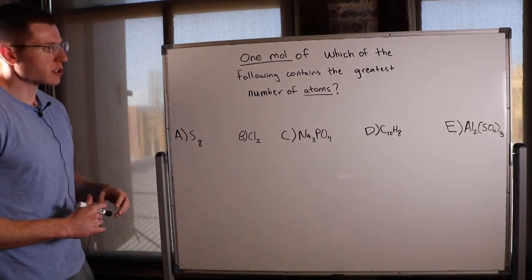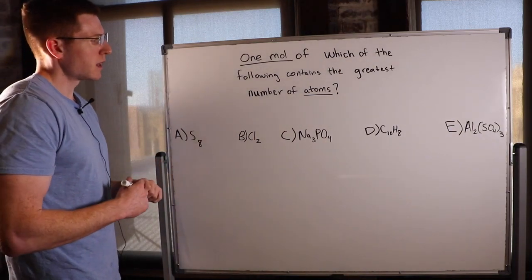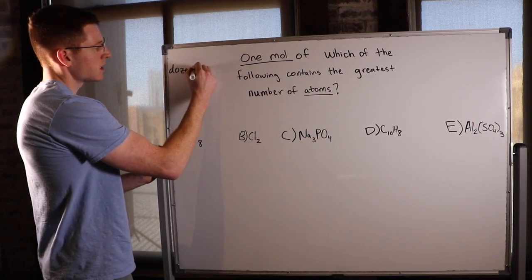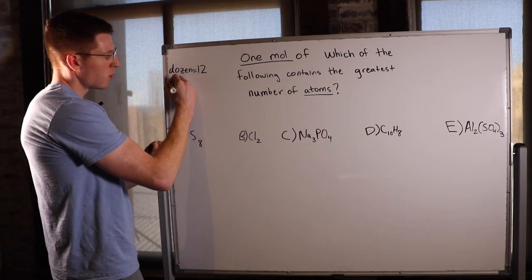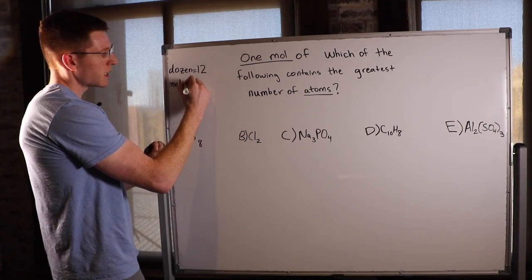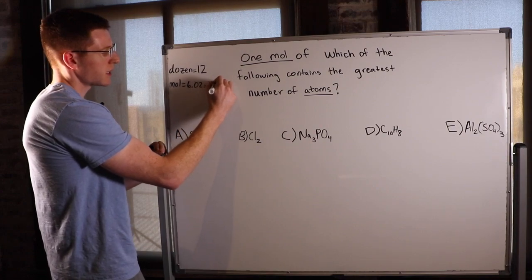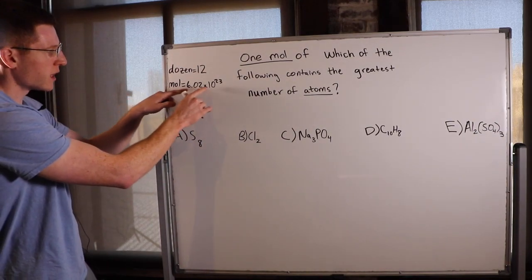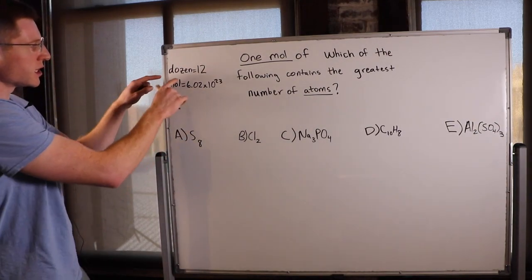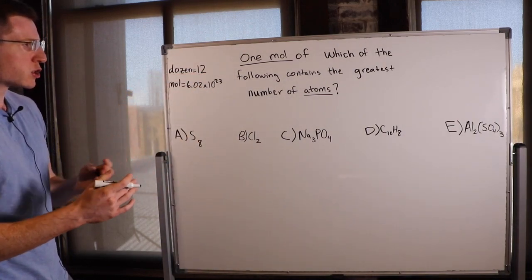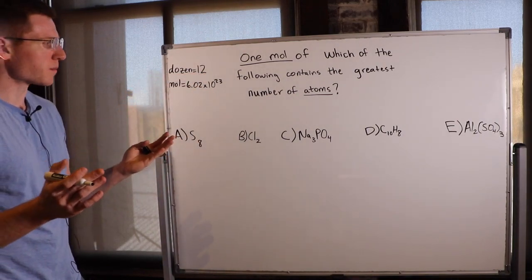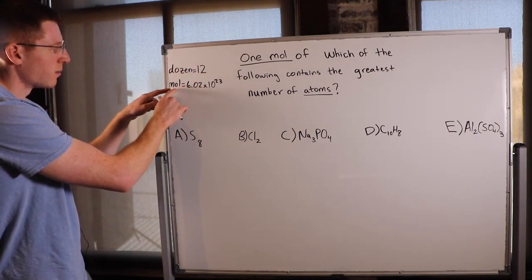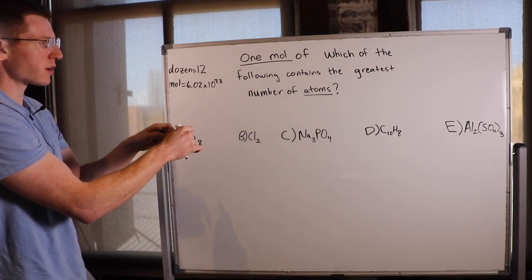Let's remind ourselves what a mole means, because this can be tricky. Just like one dozen equals 12 things, one mole equals 6.02 times 10 to the 23rd things. It really is just a word for a number, just like a dozen is a word for a number. A dozen just means 12 things — it could be 12 of anything. It usually refers to donuts, but it really could mean anything. So a mole is just 6.02 times 10 to the 23rd things.